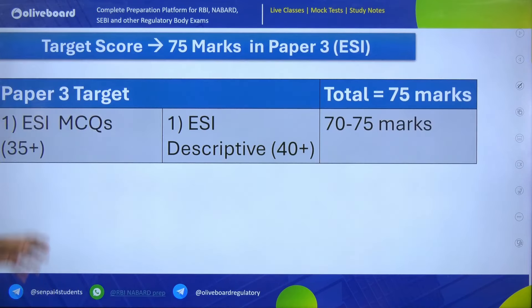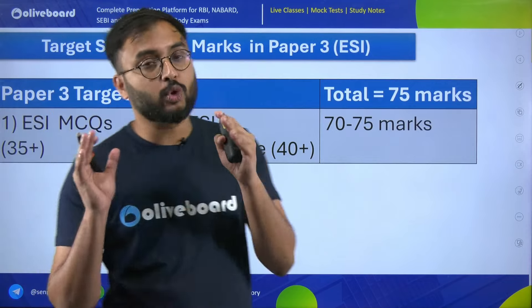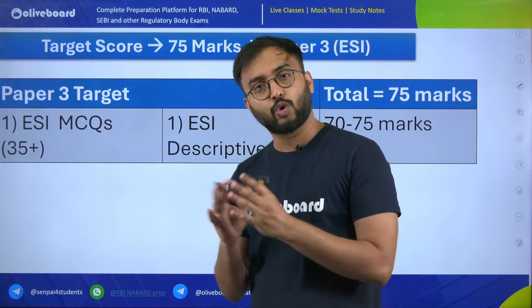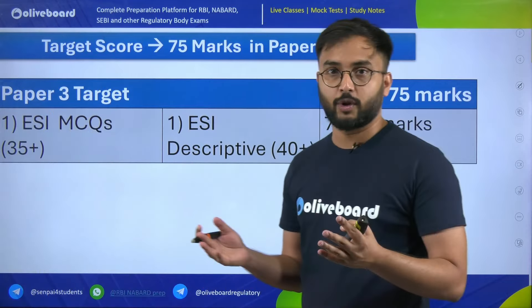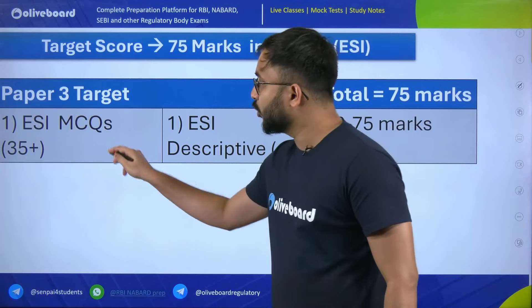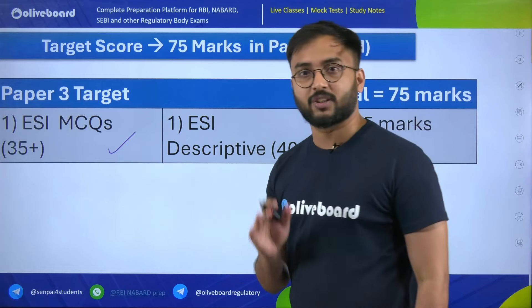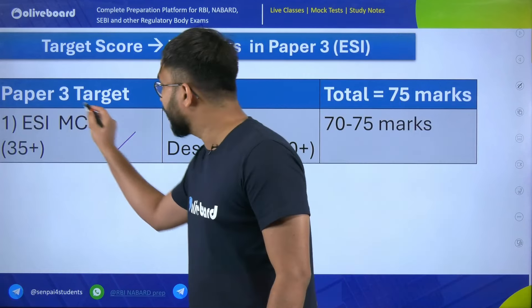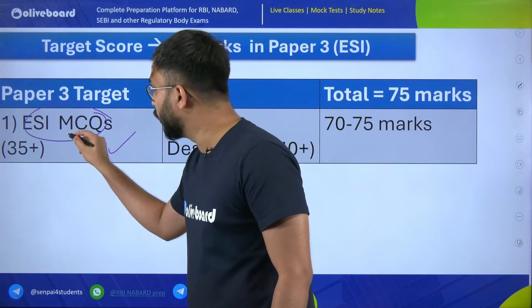With 150 marks in FM and ESI, if you also score better in English descriptive, you can go beyond 180. This is a strategy to clear phase 2 without being too dependent on interview marks. Score 75 plus in finance and management, 75 plus in ESI. That is why we have set the target score at 75 plus. Now, how do we get 75 marks in ESI? We split it between MCQs and descriptive.